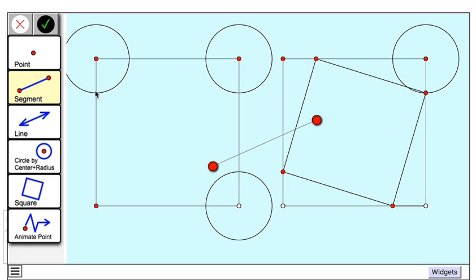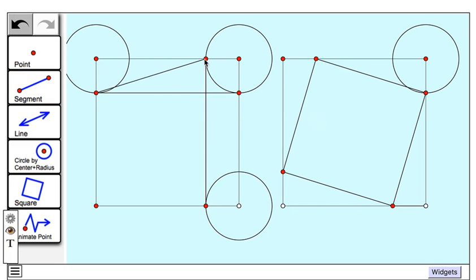Now I can use the segment tool to connect these intersection points. And one more time. And while we're at it, let's add in these diagonals of the rectangles to create our four congruent right triangles that are congruent to the right triangles here.